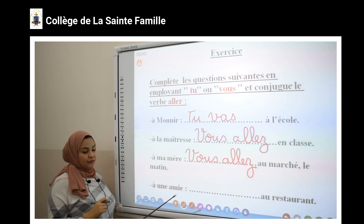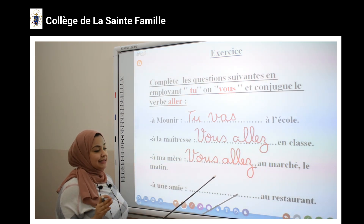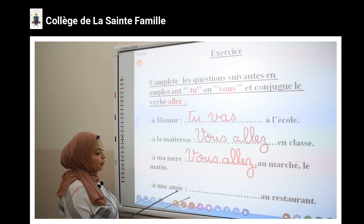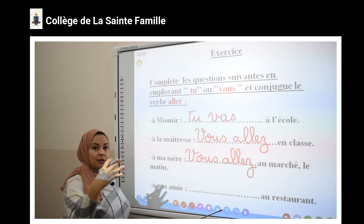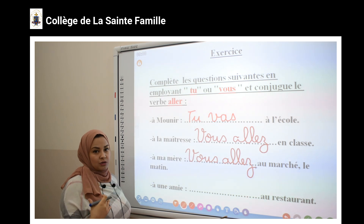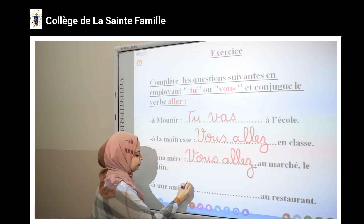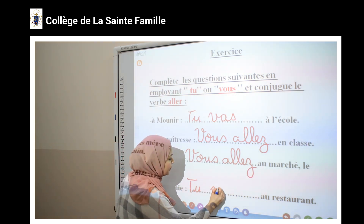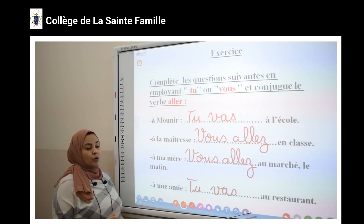La dernière phrase : je parle à mon ami, ma copine, ma camarade, ma sœur, mon frère. À mon ami — c'est-à-dire une personne qui a le même âge comme moi. Alors, j'utilise le pronom « tu ». « Tu vas au restaurant. »